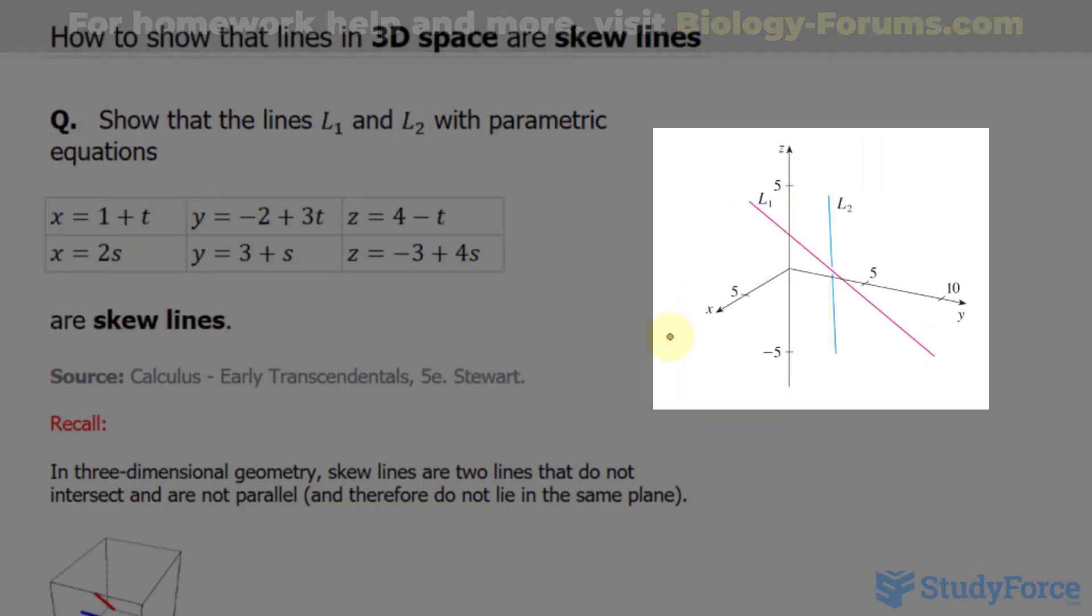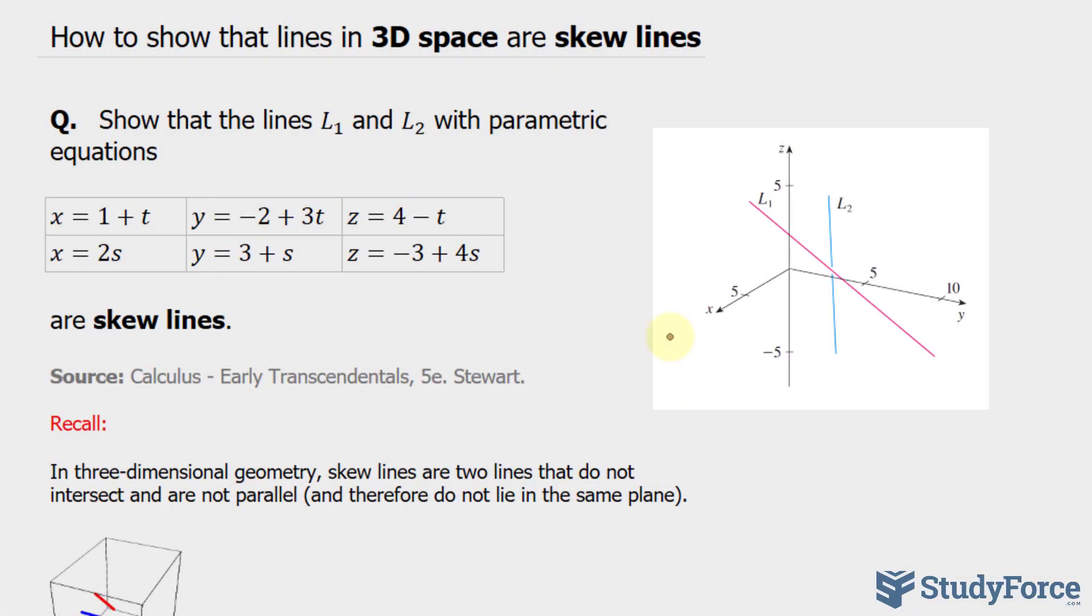If you take a look at your right, you'll see the two lines are graphed. In case you're not familiar with what skew lines are, that's when you have two lines that do not intersect and are not parallel. Therefore, they do not lie on the same plane.